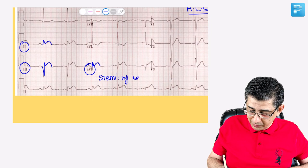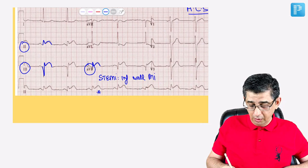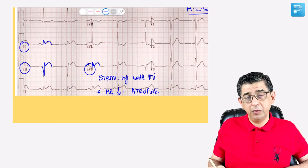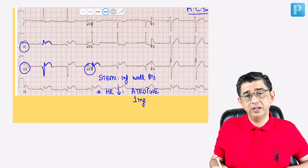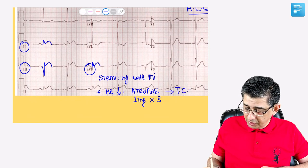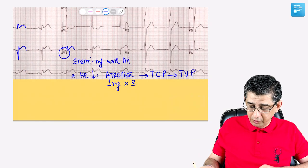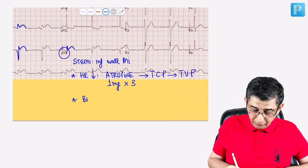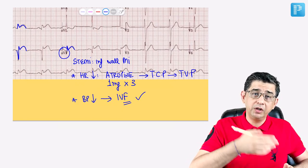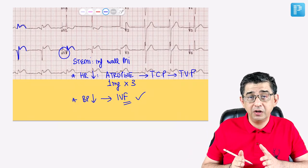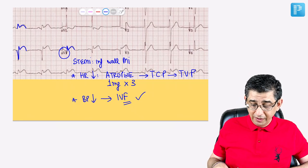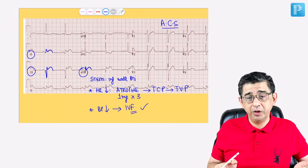For a patient with inferior wall STEMI admitted to hospital, two exam questions typically arise: first, the bradycardia component — first-line treatment is atropine. Per AHA 2020 guidelines, the dose is now 1 mg (not 0.5 mg), with a maximum of three doses. If that fails, upgrade to TCP; if unavailable, go to TVP. Second, for low blood pressure in inferior MI: IV fluids are given — the only type of MI where a fluid challenge is given — to increase right ventricular preload.